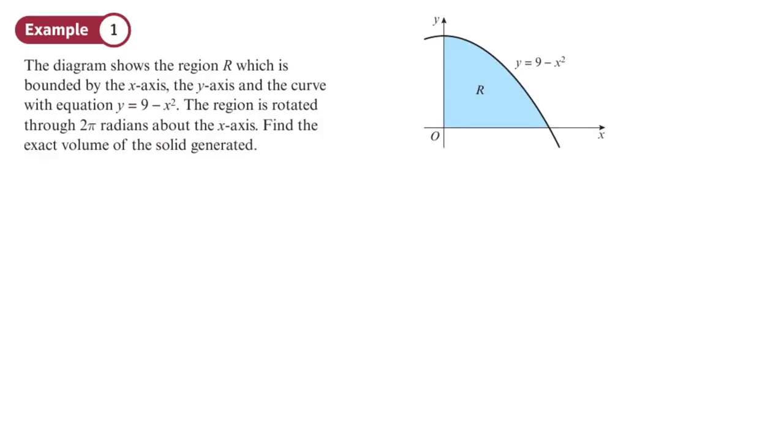Here we have a region R which is bounded by the x-axis and the y-axis, and the equation of that is y equals 9 minus x squared. The region is rotated 2π radians around the x-axis, that's 360 degrees. Find the exact volume. So the volume, just remind ourselves of the formula, is π between the limits of A and B of y squared dx.